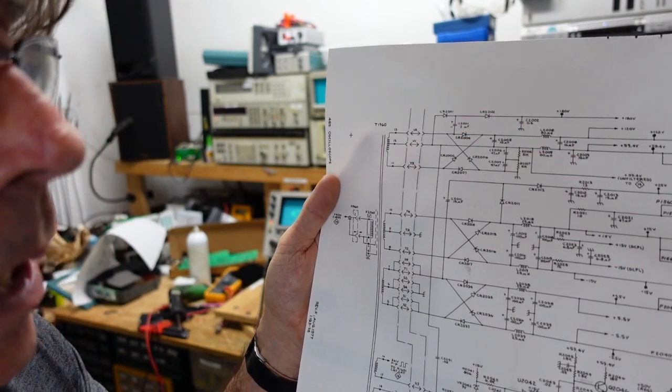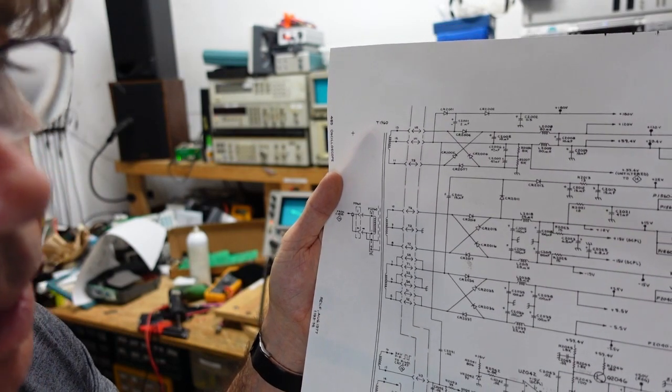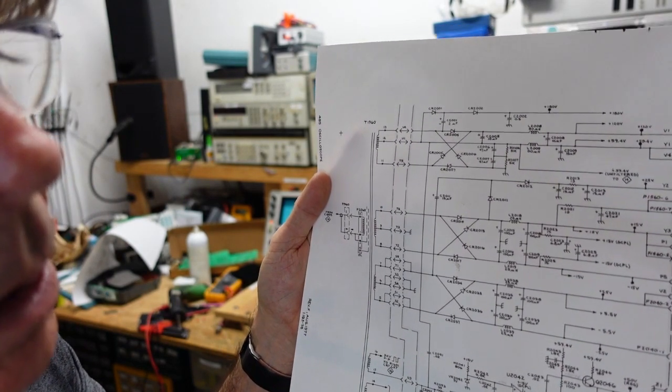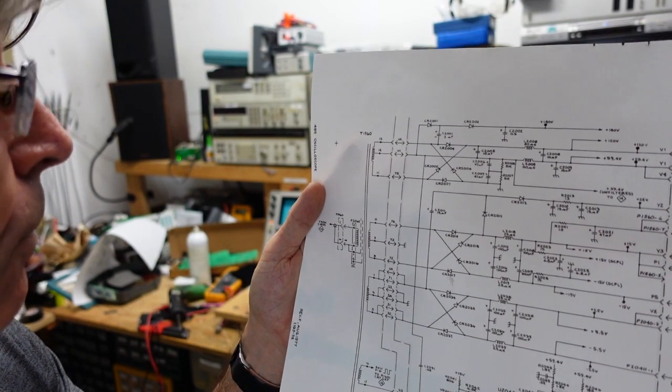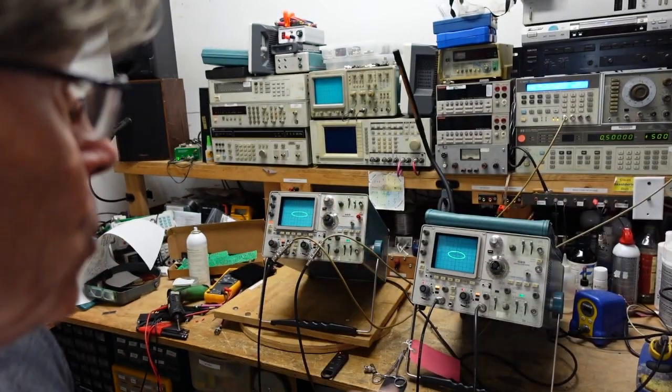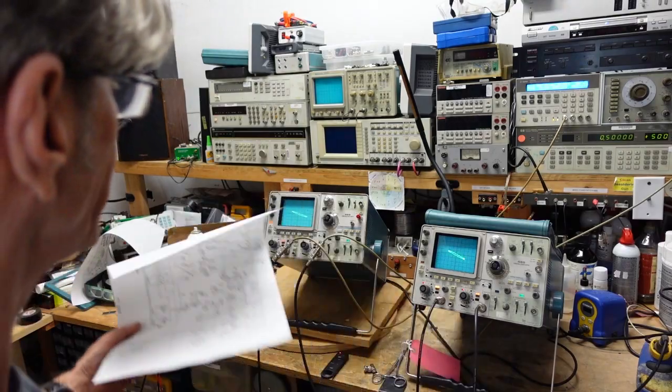I believe Tektronix used these because they were smaller and they believed they would have better longevity. And as you can see, most of them are still okay, but when they go, their general failure mode is the dead short. And indeed, that's what I found in here.